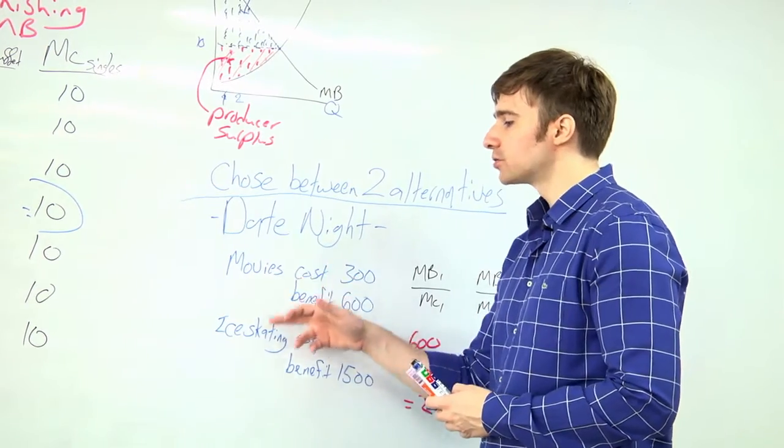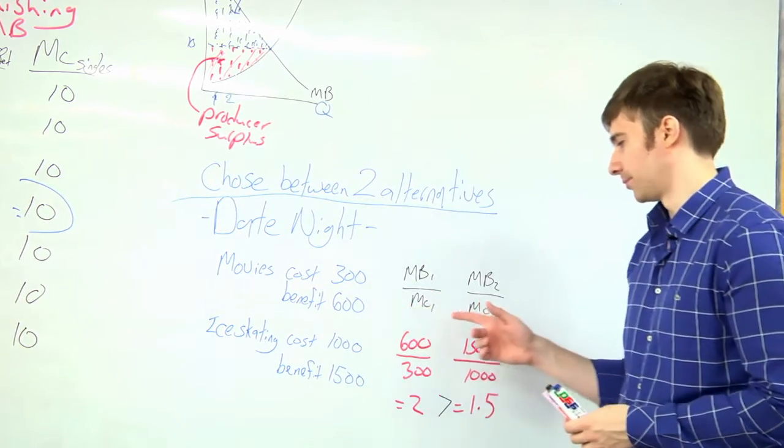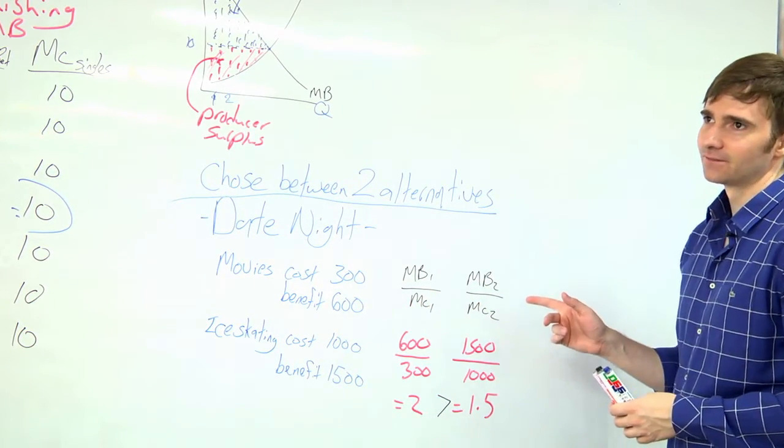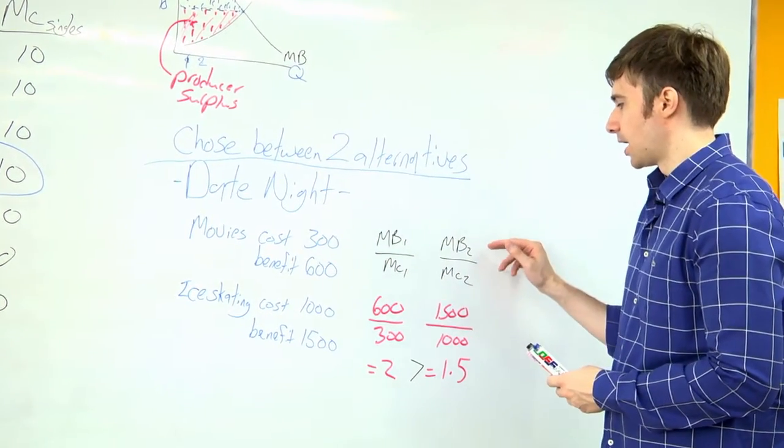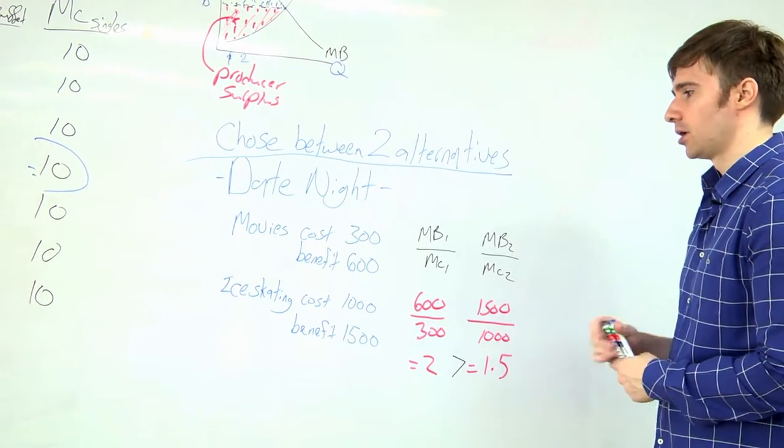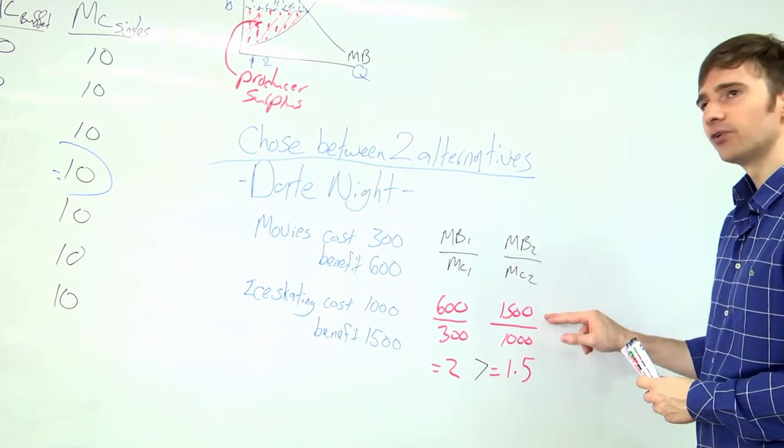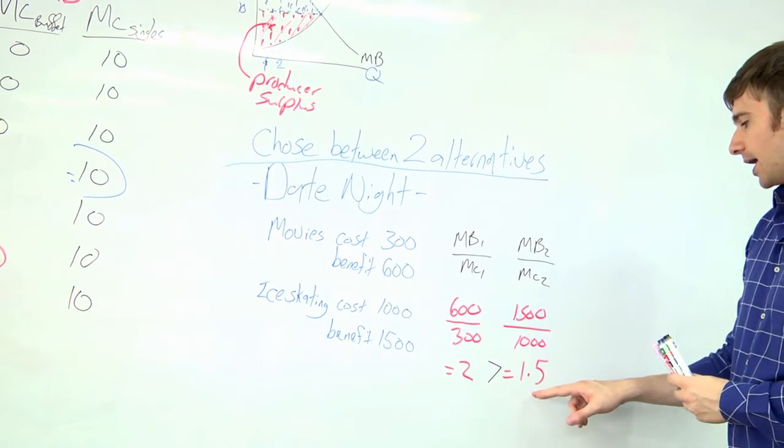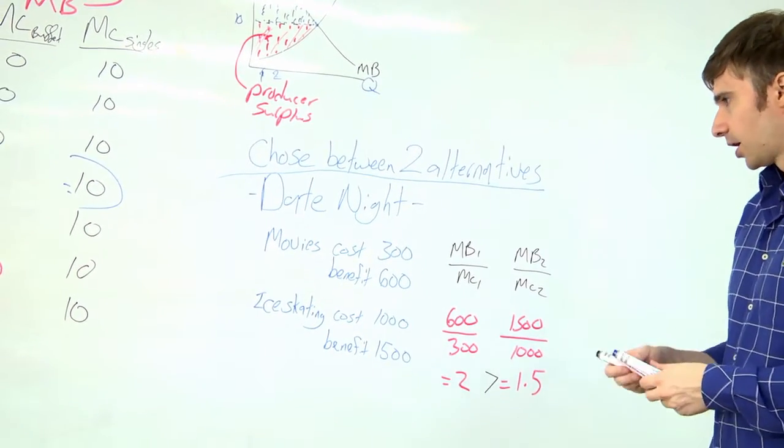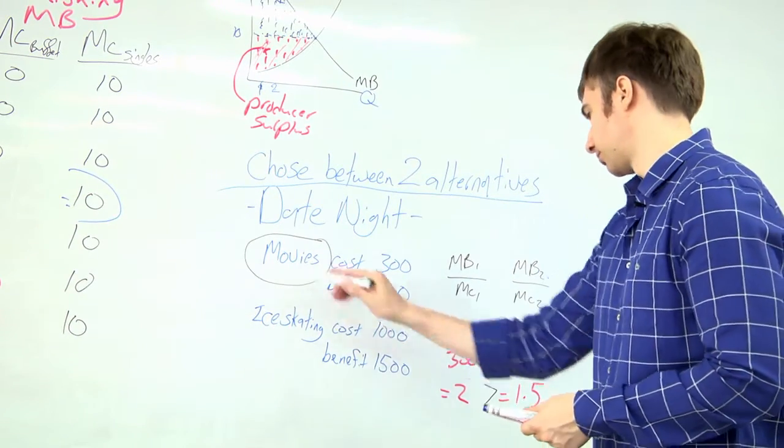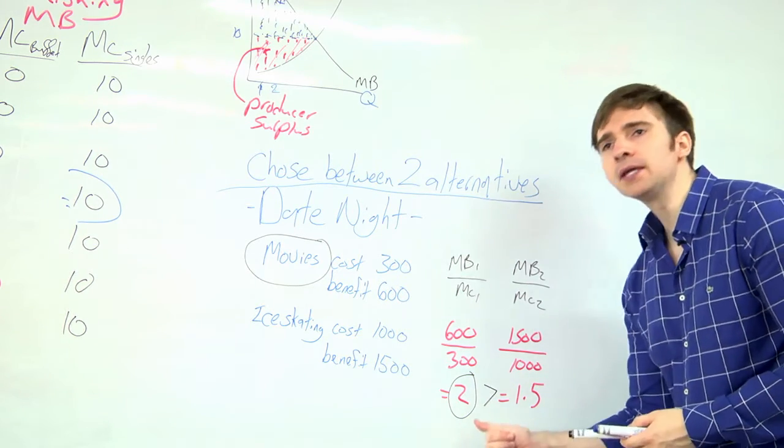Which would you choose, movies or ice skating? There's a math formula. So we can do MB1 divided by MC1, and MB2 divided by MC2. We want to solve for that, so I'll have six hundred over the three hundred, and fifteen hundred divided by a thousand. So I'll have two and one point five. We want to choose the bigger number. The bigger number is the one we'll select. So I'm going to choose movies. A two is bigger than one point five.